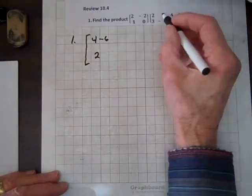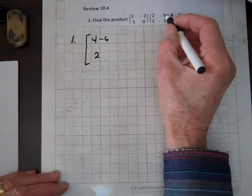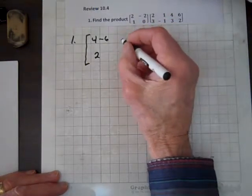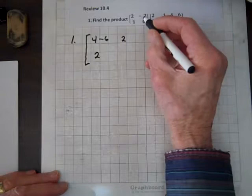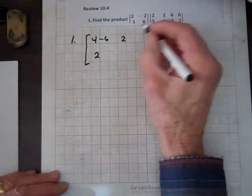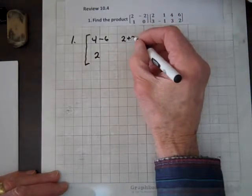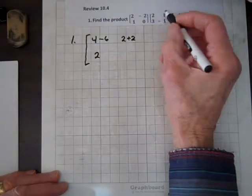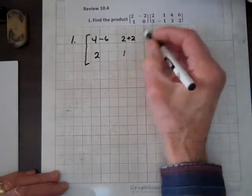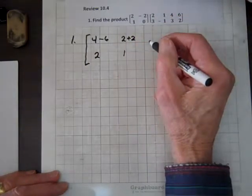Now for the next entry, we've got 2 times 1 is 2, and minus 2 times minus 1 is plus 2. And now 1 times 1 is 1, and 0 times negative 1 is 0.